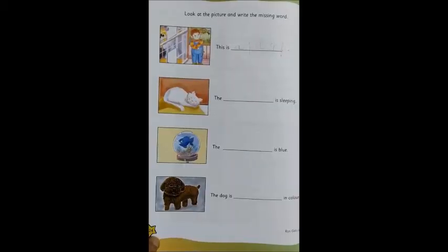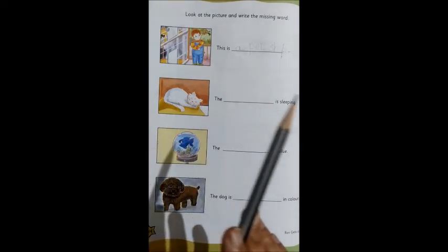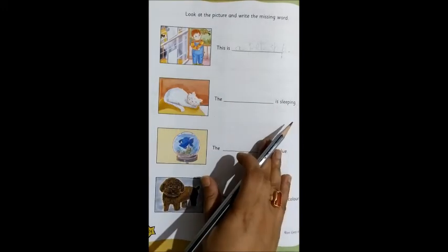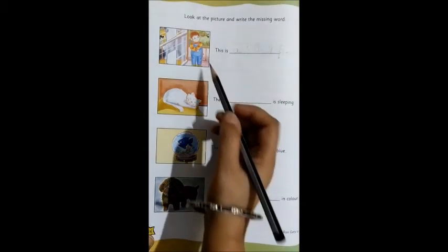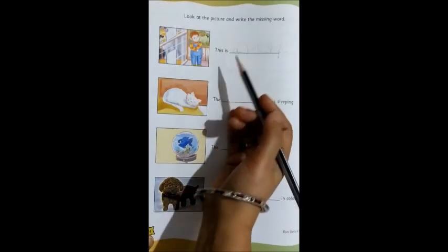So now, in this page number 24, we are going to look at the picture and write the missing word. Yes, different pictures are given. We will look at them and then complete the sentence by writing the missing word. Look at the picture and write the missing word.